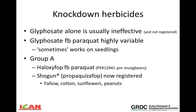Knockdown herbicides are still used quite frequently. Glyphosate alone is usually ineffective and isn't registered for feathertop Rhodes grass because it basically isn't effective. A traditional double knock of glyphosate followed by paraquat is highly variable — sometimes you can get good control on young seedlings, but generally once plants get a bit of size, control is highly variable to poor in most situations. Our Group A herbicides, particularly the FOP subclass, are generally reasonably good providing we're treating small weeds under good application conditions.